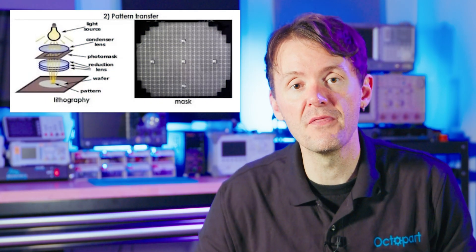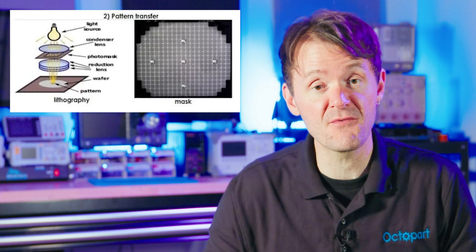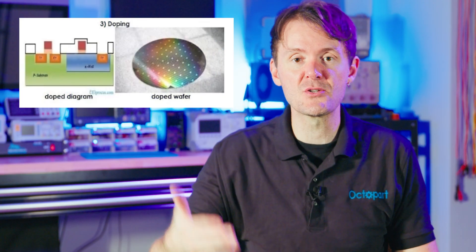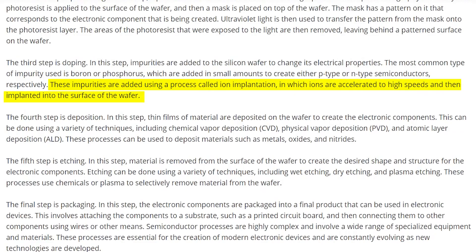The wafer undergoes photolithography, where light is used to transfer patterns onto the surface. This process involves coating the wafer with a light-sensitive material, exposing it to ultraviolet light through a mask, and developing a pattern by removing exposed areas. Then there's doping: to alter the electrical properties of the silicon wafer, impurities are added through a process called ion implantation. This step is crucial for defining the N-type and P-type regions within the semiconductor.